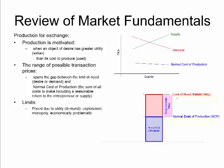Production is motivated when an object of desire — something that we want — has a greater utility, in other words a value or benefit to us, than its cost to produce. When we're talking about cost to produce, we're always talking about the normal cost to produce. The difference between the lean cost to produce and the normal cost to produce is that the normal cost of production includes a reasonable return to the producer, the business owner, and the entrepreneur.